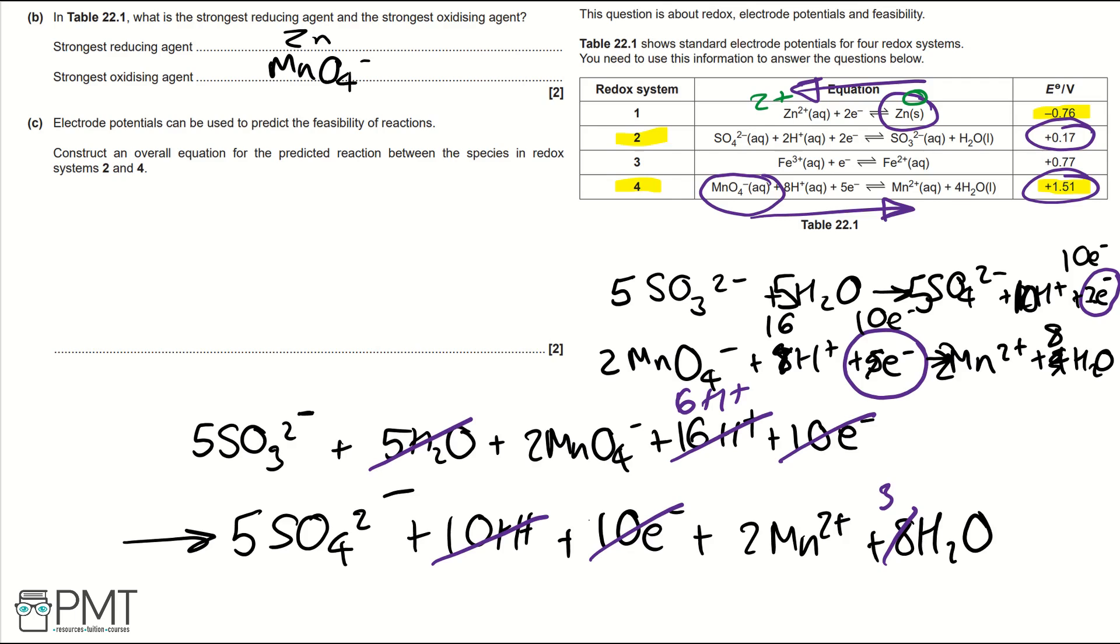Therefore, our overall equation would be 5SO3 2- plus 2MnO4- plus 6H+ goes to 5SO4 2- plus 2Mn2+ plus 3H2O. To get the two marks for this question, you need to have the correct and full equation. If you haven't scaled up your electrons properly, that's a mark you lose. So scaling up the electrons and doing all of this cancelling out, that's your mark to get the second mark and your overall equation correct.